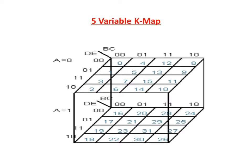Both K-maps are connected in parallel. So cell 0 is adjacent with 16, 1 is adjacent with 17, 3 is adjacent with 19, 2 is adjacent with 18. The same way, 4 is adjacent with 20, 5 with 21, 7 with 23, 6 with 22. Also, 12 is adjacent with 28, 13 with 29, 15 with 31, 14 with 30, 8 with 24, 9 with 25, 11 with 27, and 10 with 26. When cells 4 and 20 have 1s, we can group them into a single cell grouping. This is how we group a 5-variable K-map.